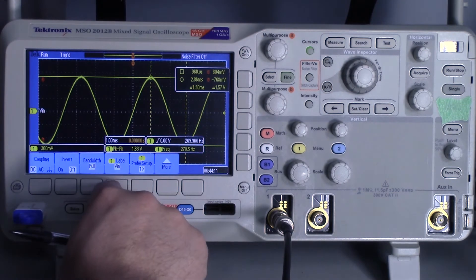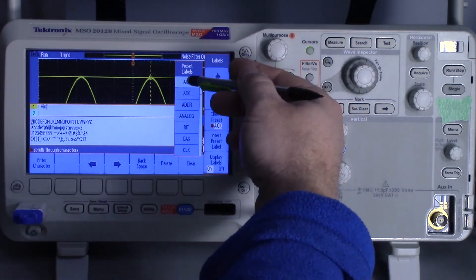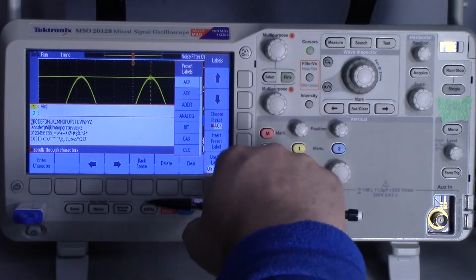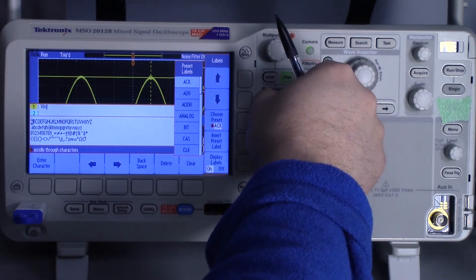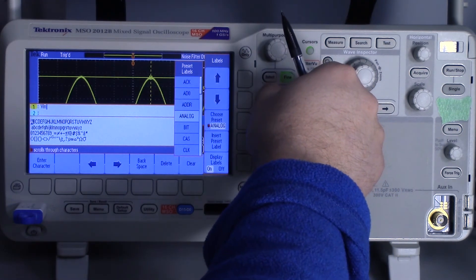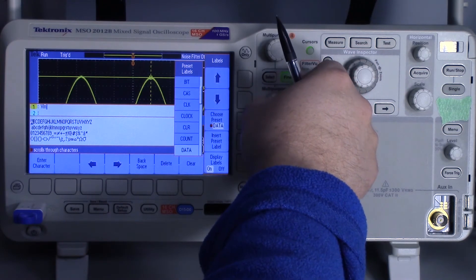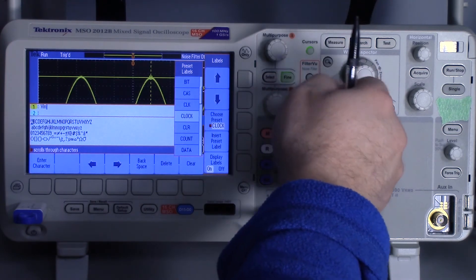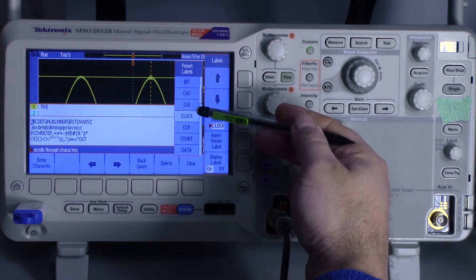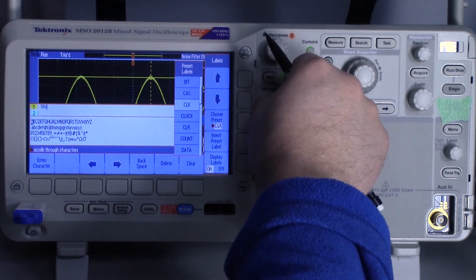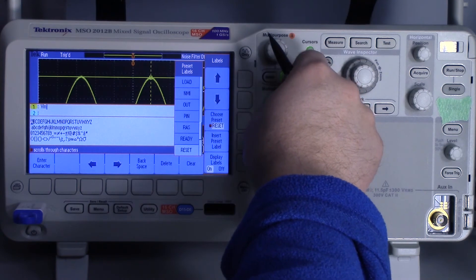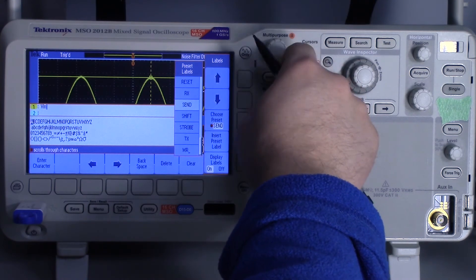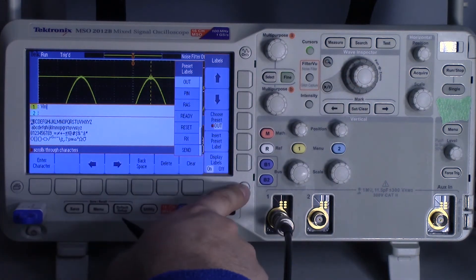You want to keep it to something fairly simple. There are a bunch of default ones with the multipurpose knob B. These are all relatively short. If you're measuring I squared C, you can have something as clock and the other one as data. You can find some fairly common ones, but we're just going to go with VIN.